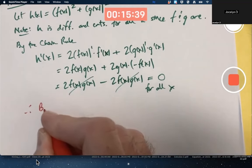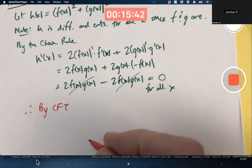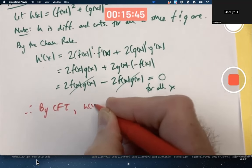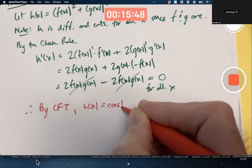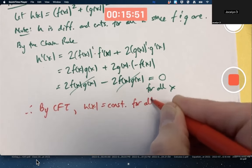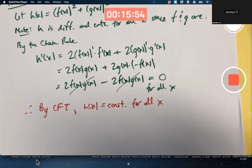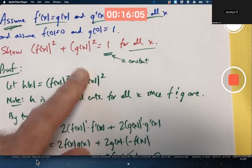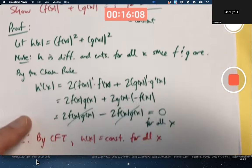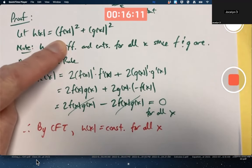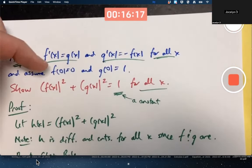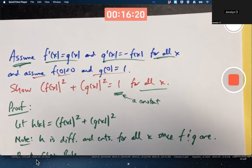Therefore, by the constant function theorem, CFT stands for constant function theorem, h of x is a constant c for all x. That's what the constant function theorem allows us to conclude. If the derivative is always zero, the function's got to be constant. Am I finished? Well, not quite. I'm trying to show this equals one. Since h of x is this, I've shown this is constant, but why is the constant one? Well, it's because I haven't used, I haven't proved that yet because I haven't used these other assumptions here and here. Use those now.